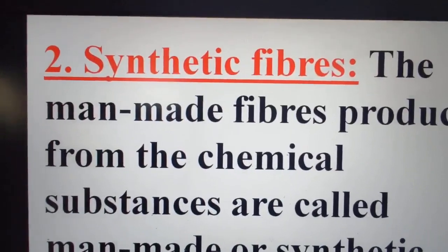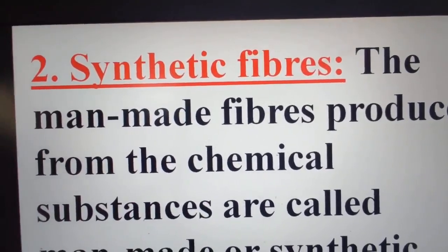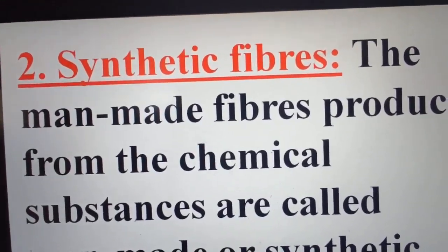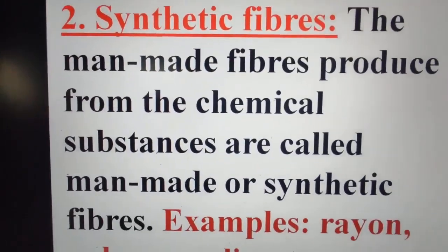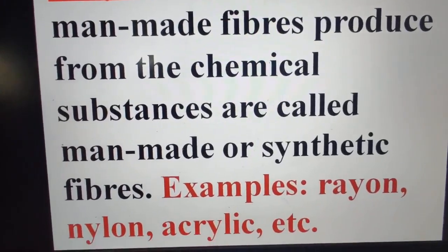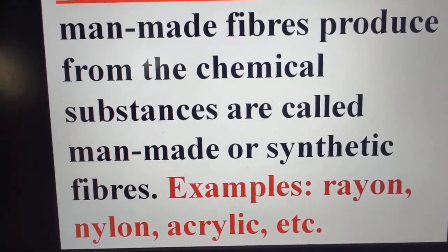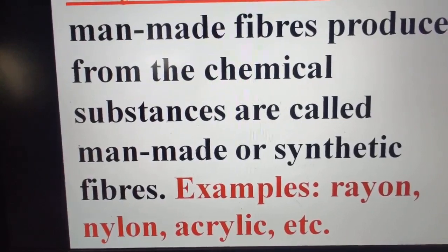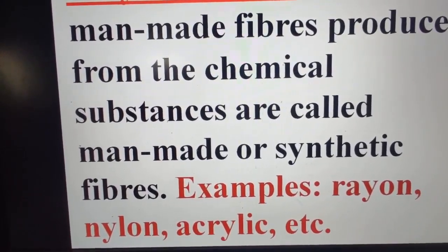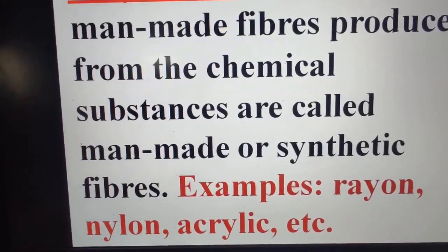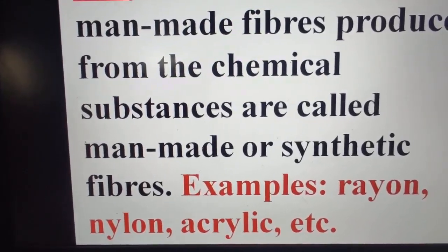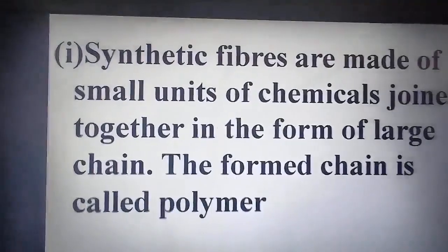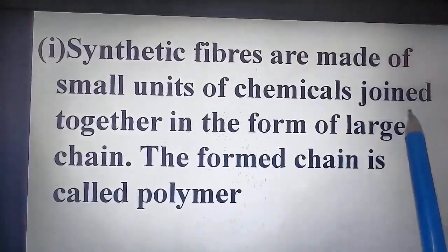Synthetic fibers are man-made fibers produced from chemical substances. Rayon is also known as artificial silk and is a semi-synthetic fiber because wood pulp and chemicals are both involved. Nylon was the first completely synthetic fiber, used for making parachutes, car seat belts, etc. Acrylic is also known as artificial wool and is used in making blankets.